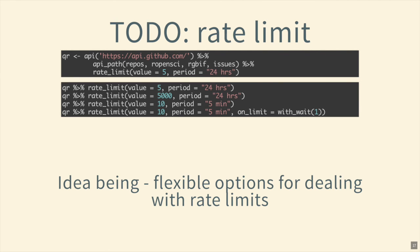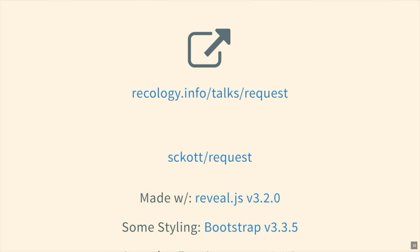Rate limiting is another pain point when working with APIs. I'm not sure how to structure it yet — REST APIs are so variable there's no one standard way. The user would need to provide input about what the rate limits are, and then we can help them deal with hitting those limits. That's it — the talk is at recology.info, the package is called 'request' on GitHub.